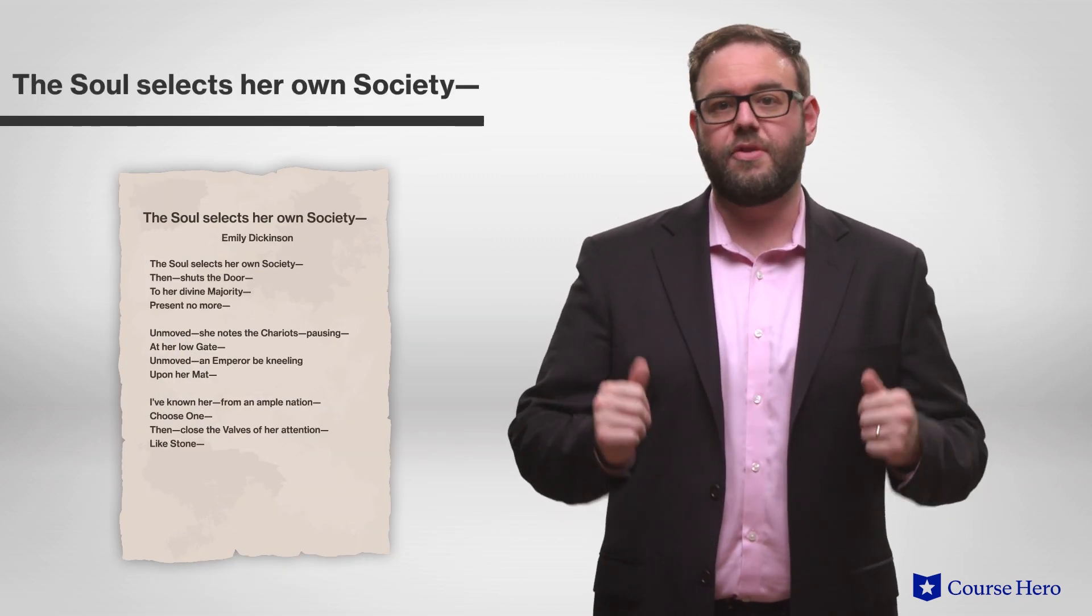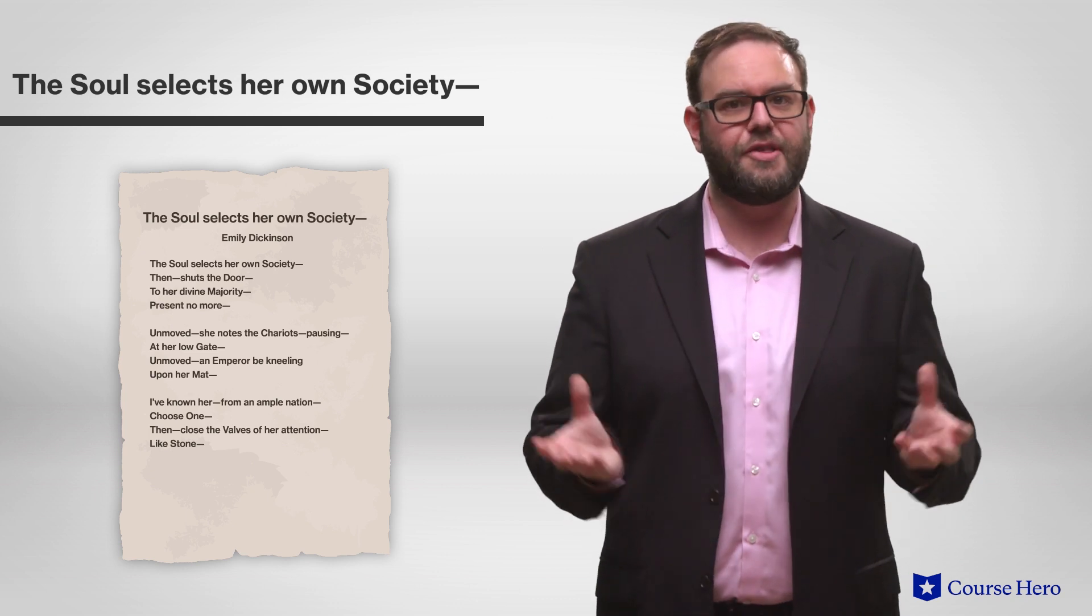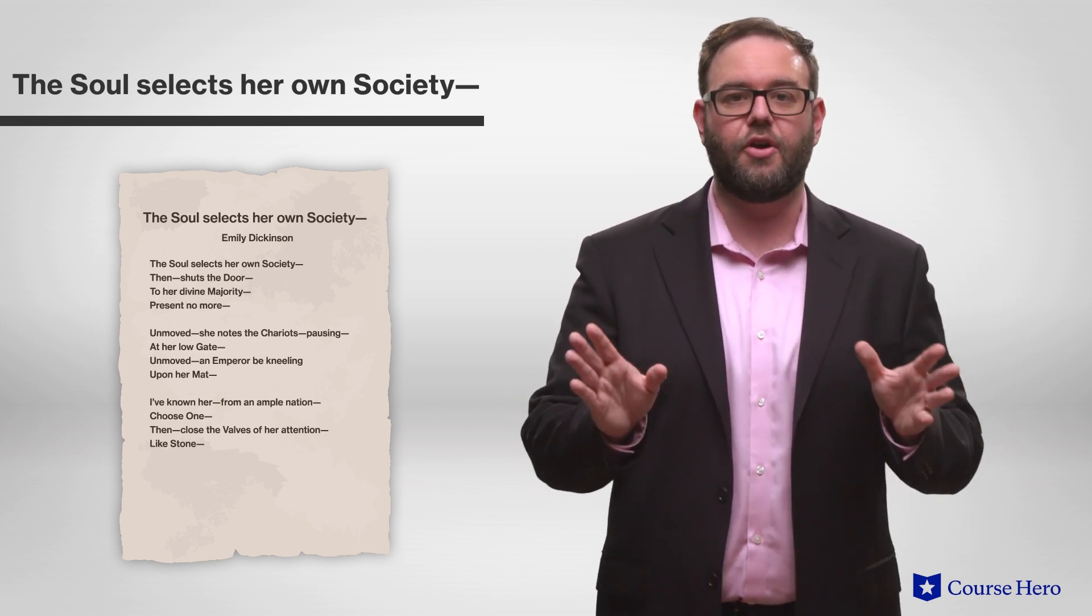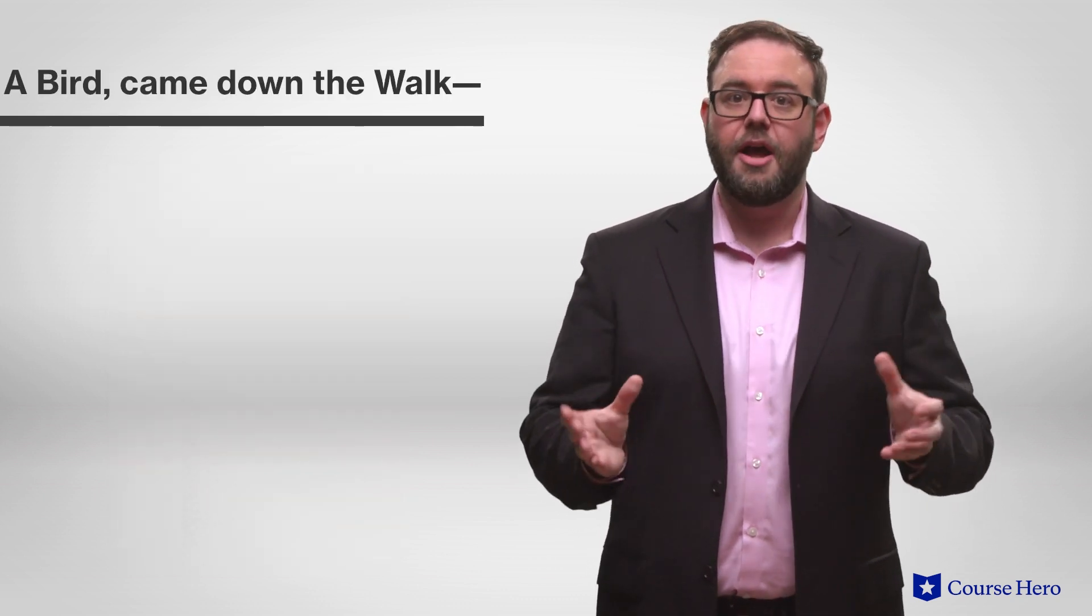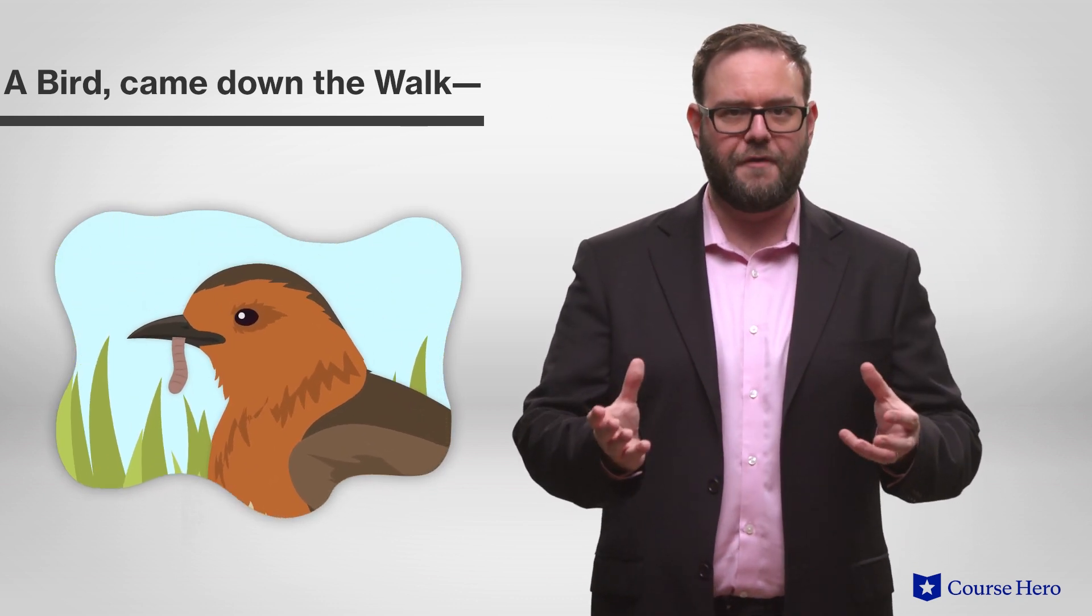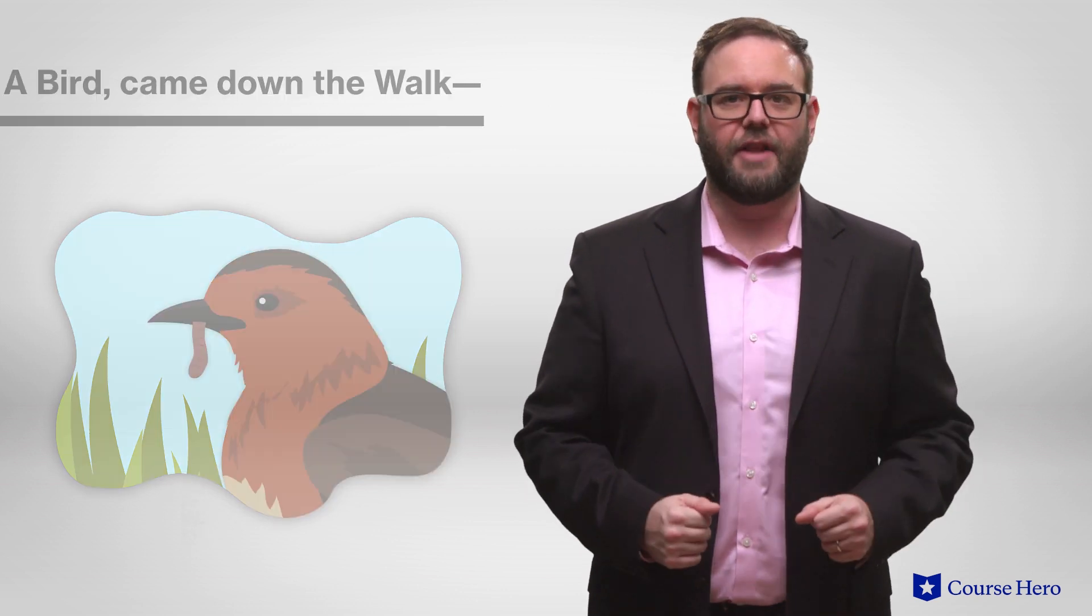In The Soul Selects Her Own Society, the speaker describes the way one, the soul, chooses friends or companions, selecting those with whom she will associate, and then shutting herself off from everyone else. In A Bird Came Down the Walk, the speaker encounters a bird, which bites a worm in halves before eating it, drinks dew from a blade of grass, and allows a beetle to walk by unharmed before it takes off flying.